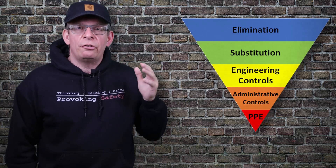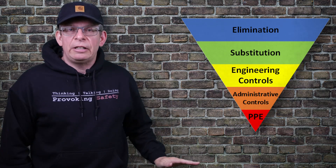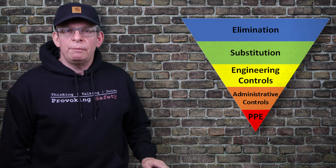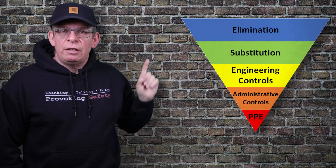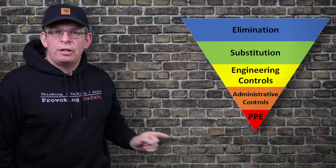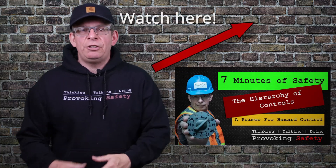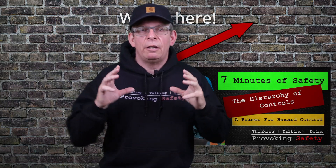Here we are at pretty much the final part of the whole hazard assessment process: the application of controls. When considering the application of controls, we have to consider how it's done. A quick review on the hierarchy of controls — elimination, substitution, engineering controls, administrative controls, and PPE. If you want good examples of each, there's a link in the corner to a video I did previously on the hierarchy of controls.